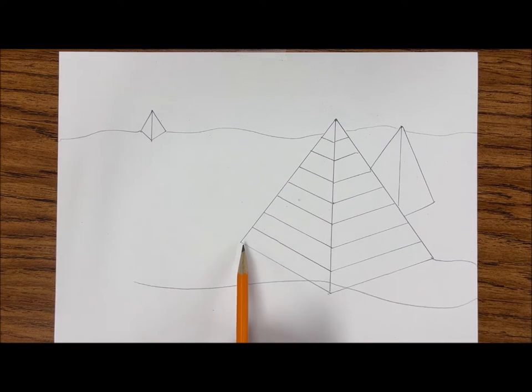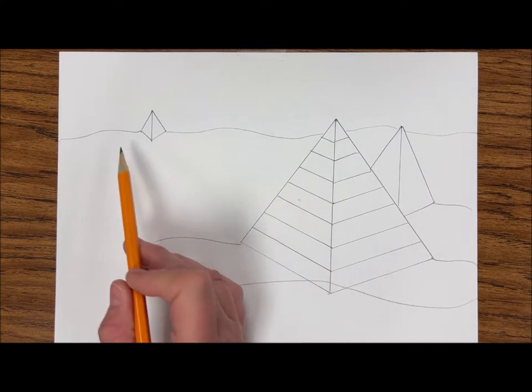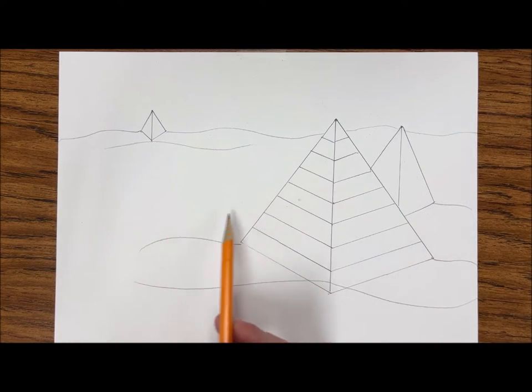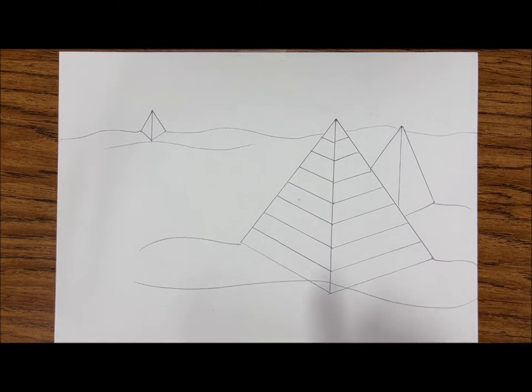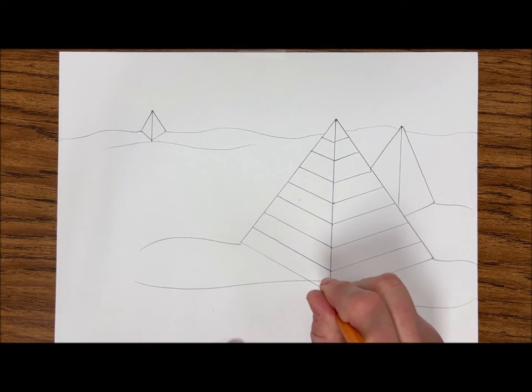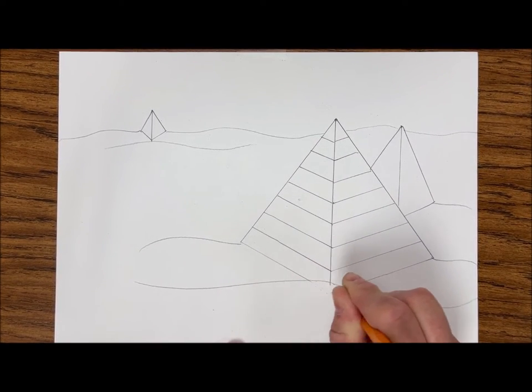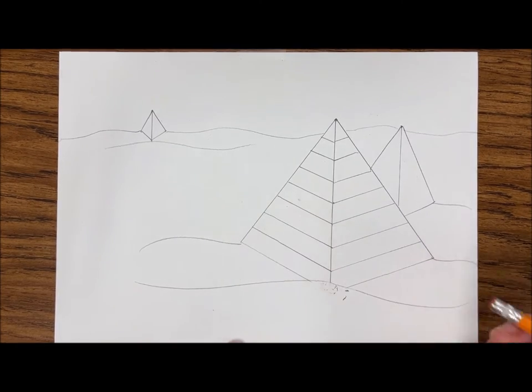I now have a foreground towards the bottom of the page here, I have a middle ground which are the pyramids a little ways back, and I have a background which are the small pyramids in the back.